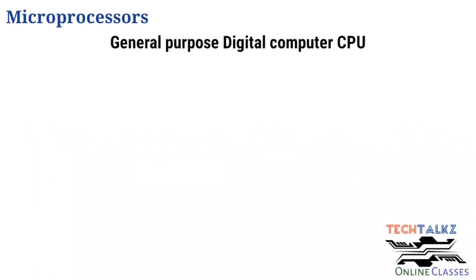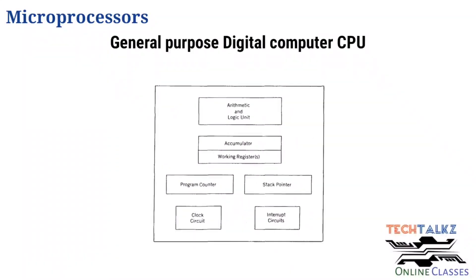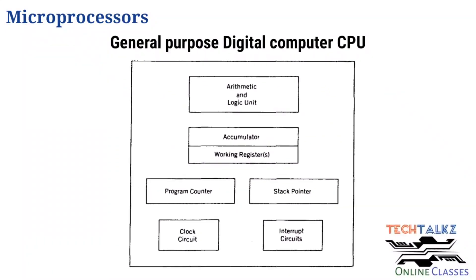A microprocessor is known as a general purpose computer's central processing unit. Looking at the block diagram, the main items are the arithmetic and logic unit, accumulator and other working registers, program counter, stack pointer, and clock and interrupt related circuits.